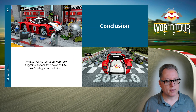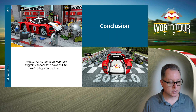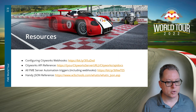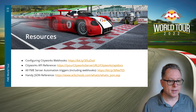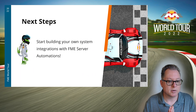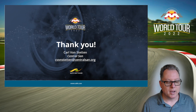To wrap up, we've seen that FME server automation webhook triggers can facilitate powerful no-code integration solutions. Using the familiar FME workspace tools, publishing those to FME Server, and building them into an automation, you can accomplish almost anything. There are resources to help you get started with webhooks in CityWorks, how automation triggers including webhooks work in FME Server, and a JSON reference for how JSON messages are structured. Now go out there and start building your own system integrations with FME server automations. Thank you for your time — feel free to send me an email if you have questions, and I hope you enjoy the rest of the FME World Tour.